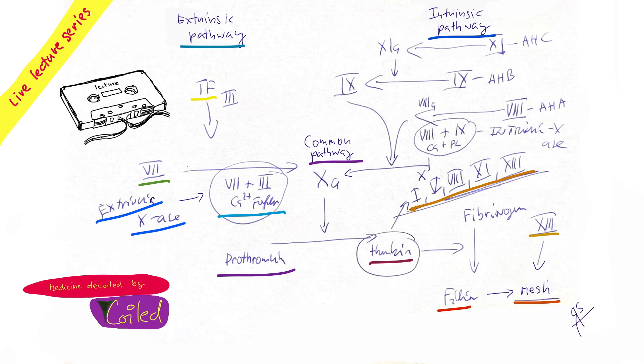And how was it with the intrinsic cascade? You can forget the twelve. Nine and eight. And this one, when it's activated, and this one, together with activated factor eight. Factor eight. So factor eight plus factor nine, again with calcium and phospholipids, forms the intrinsic tenase.